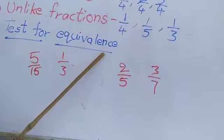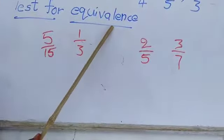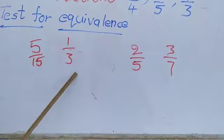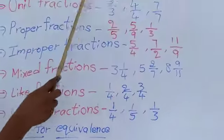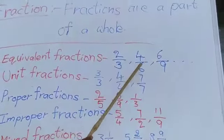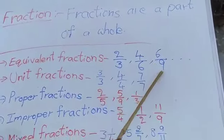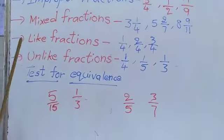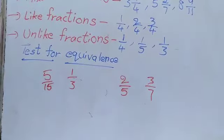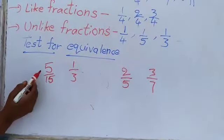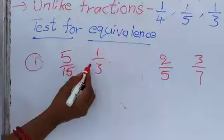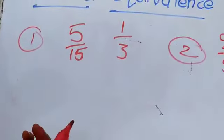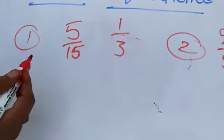Now we discuss the test for equivalence. If given two fractions, we check whether those two fractions are equal or not equal. For example, 5 by 15 and 1 by 3 — are these two fractions equal or not equal? How can we find?